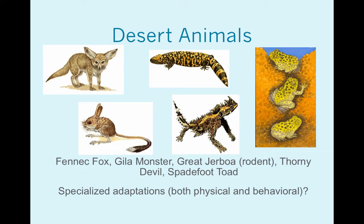Desert animals also have lots of adaptations. If you look at the fennec fox — go Google it if you want to see the cutest animal that has ever existed — one of the adaptations they have are those really big ears. There are a lot of blood vessels circulating through there, and that helps to cool the animal down because they don't sweat. They are also nocturnal — they only come out at night and stay in their burrows during the hottest part of the day.